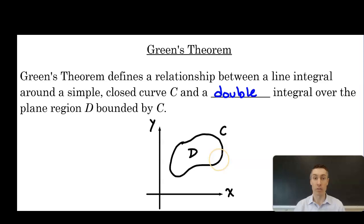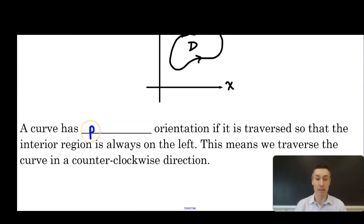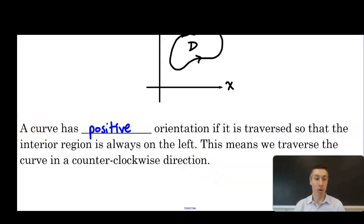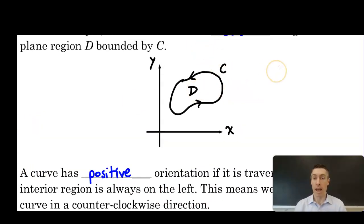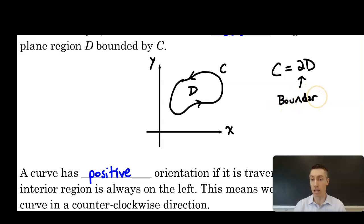We also need a direction for the curve C. In a vector field, direction matters. We define the direction to be counterclockwise, so that if we were walking along the curve, the interior would stay on our left. A curve has positive orientation if it is traversed so that the interior region is always on the left — meaning we traverse counterclockwise. Notationally, the curve C is often denoted in terms of D, indicating that C is the boundary of region D.